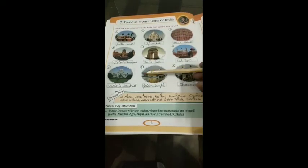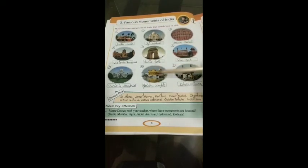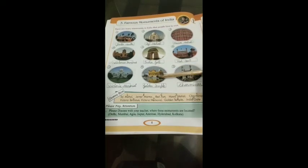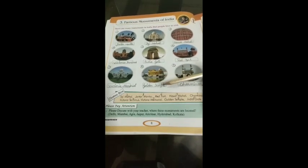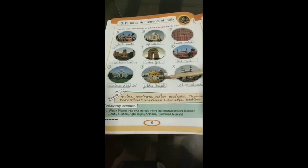Look at the eighth picture. This is the picture of Golden Temple. Bahut saare bachche gaye honge Golden Temple dekhne bhi. And it is situated in Amritsar. Isko Harmandir Sahib bhi bola jata hai. Iska other name Harmandir Sahib hai. Aur Sikhs ke fourth Guru, Guru Ramdas Ji ne isko banwaya tha. Iska dome golden hai, isliye isko Golden Temple bola jata hai.